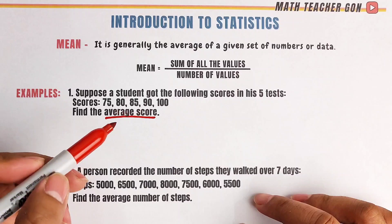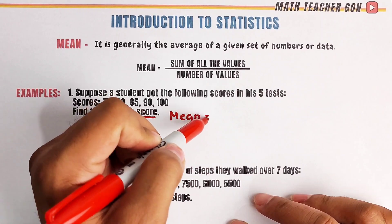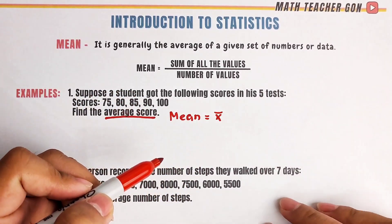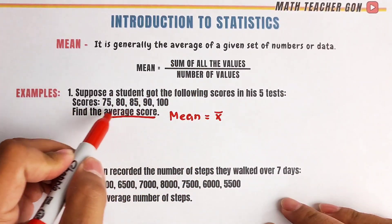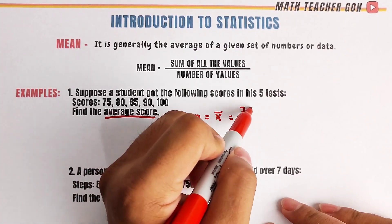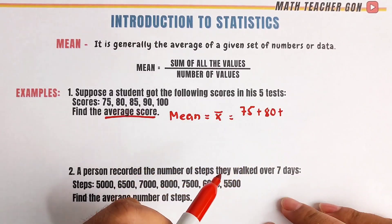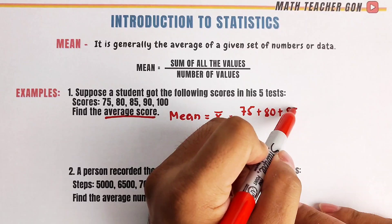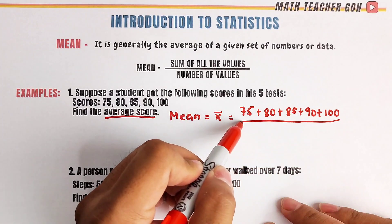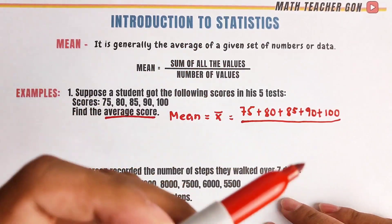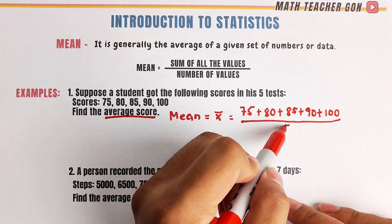So how do we do that? First, we get the value of mean — in other references, they use the symbol x-bar. Then, following our formula, that is the sum of all the values, meaning we need to add these five numbers: 75 plus 80 plus 85 plus 90 plus 100, all over the number of values. We count the items: one, two, three, four, and five — so this will be over 5.